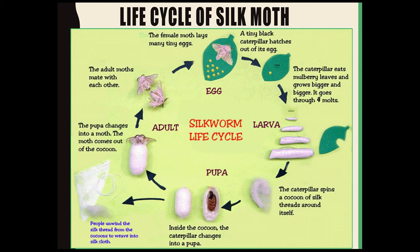This fibroin protein hardens on exposure to air and becomes the silk fiber. Soon, the caterpillar completely covers itself with the silk fiber and turns into a pupa. This covering is known as a cocoon. You can see a caterpillar developing inside the cocoon — this stage is known as the pupa stage.